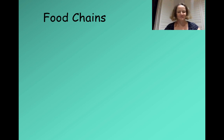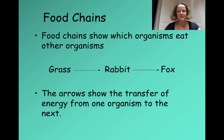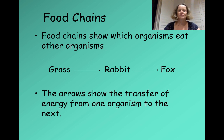Food chains show which organisms eat other organisms. If we look at this simple food chain, the grass is eaten by rabbits and rabbits are eaten by foxes. The arrow can be used to show 'is eaten by,' but really the arrow shows transfer of energy from one organism to the next.